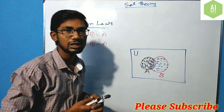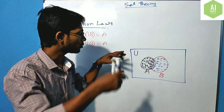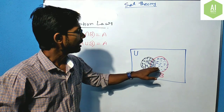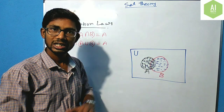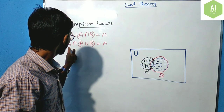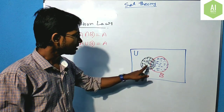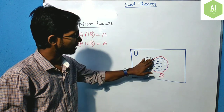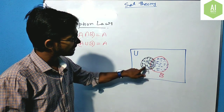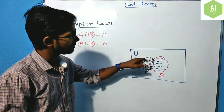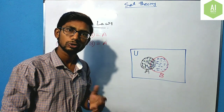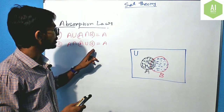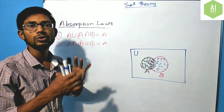The intersection means the common region. Blue ink was used for A union B and black ink for A. The place where both blue and black overlap is exactly set A. That's why A intersection (A union B) is equal to A.